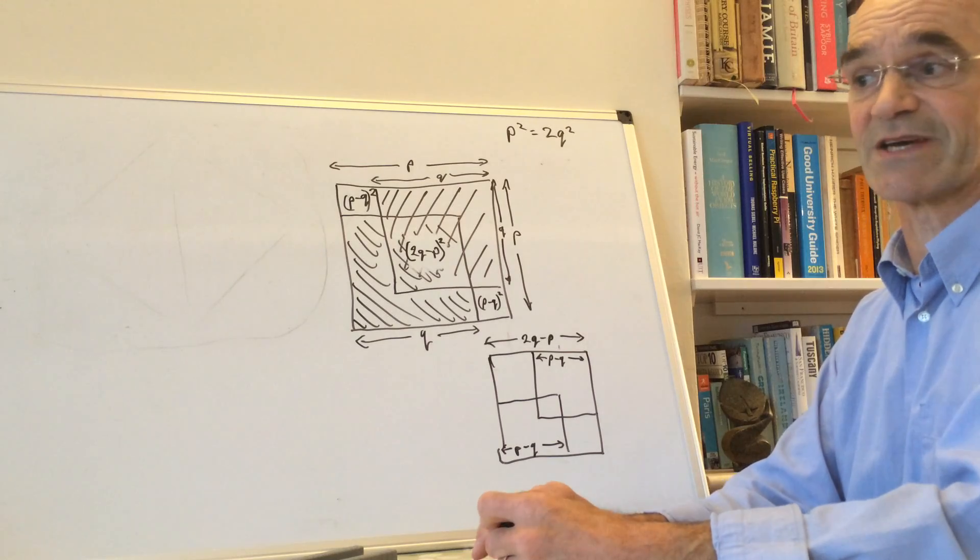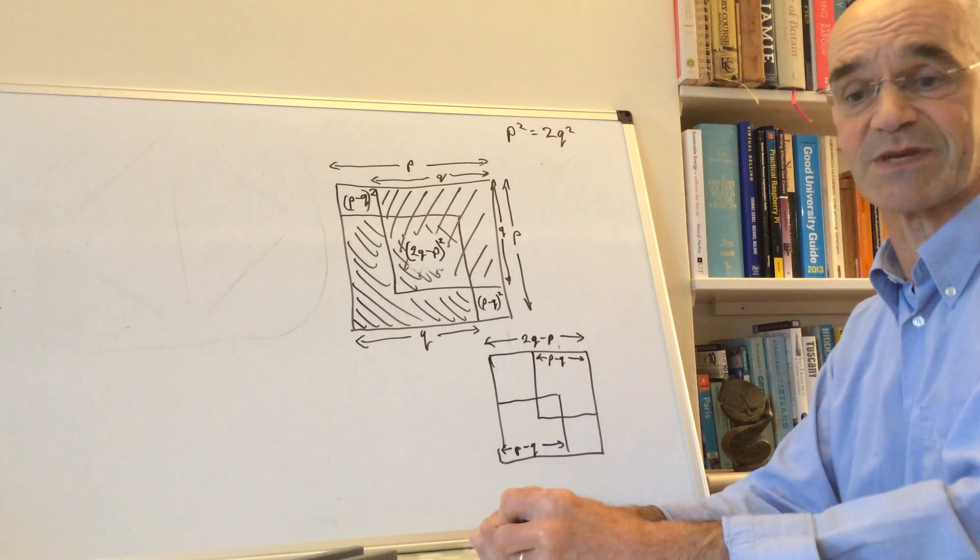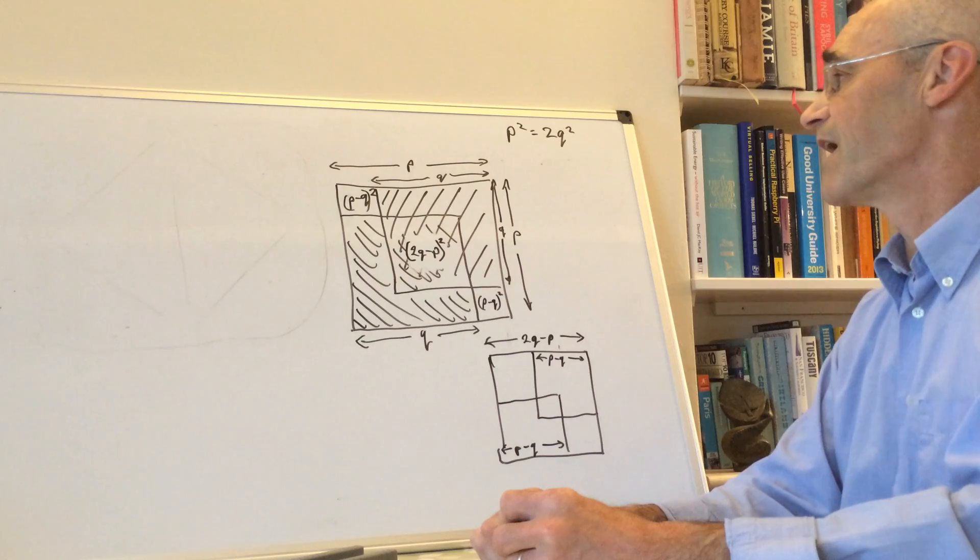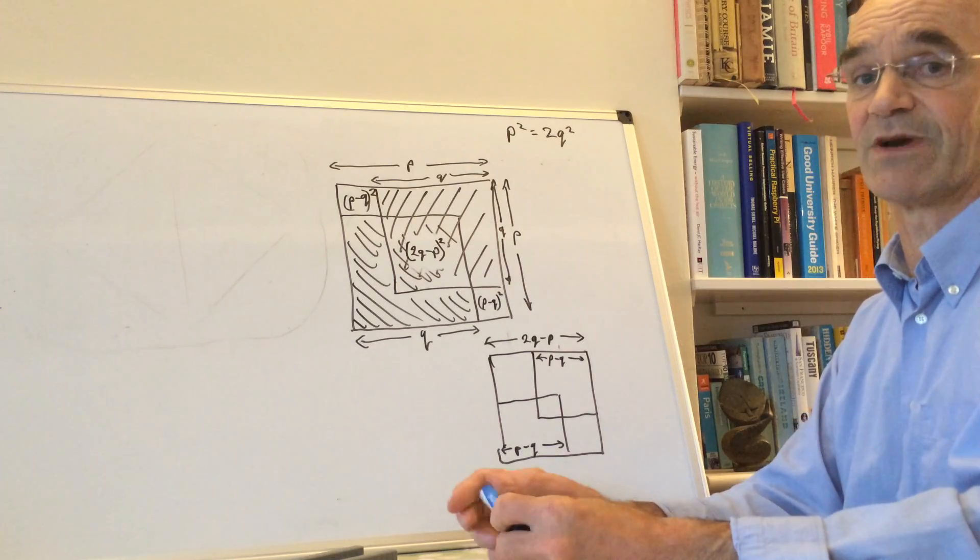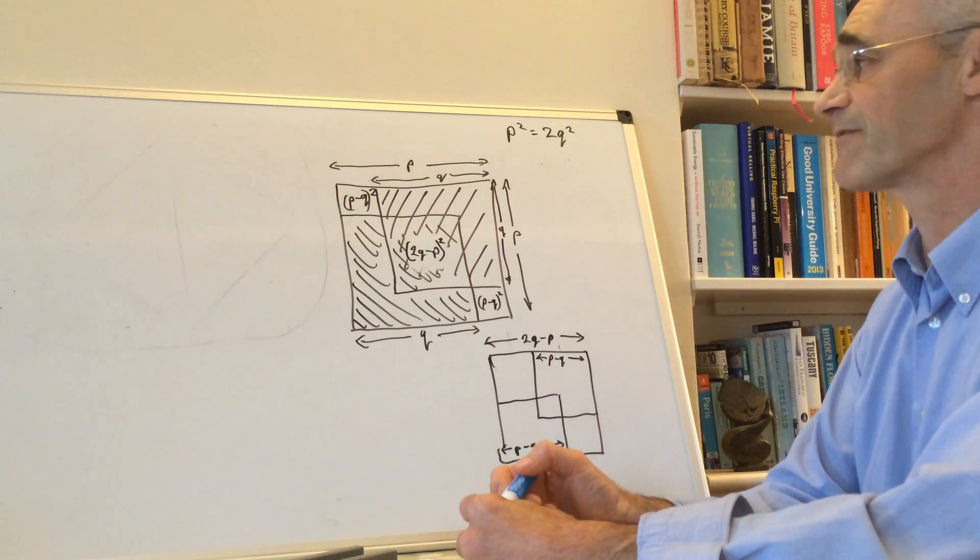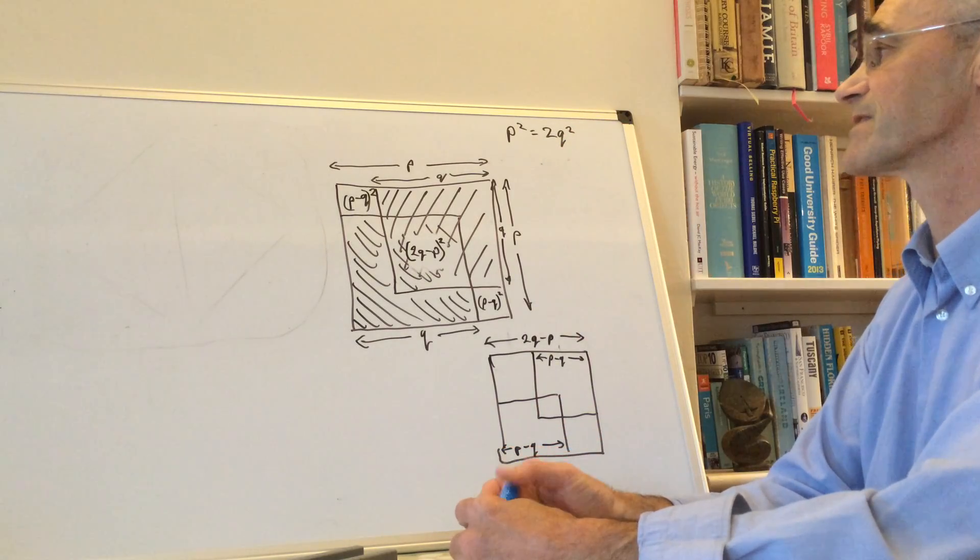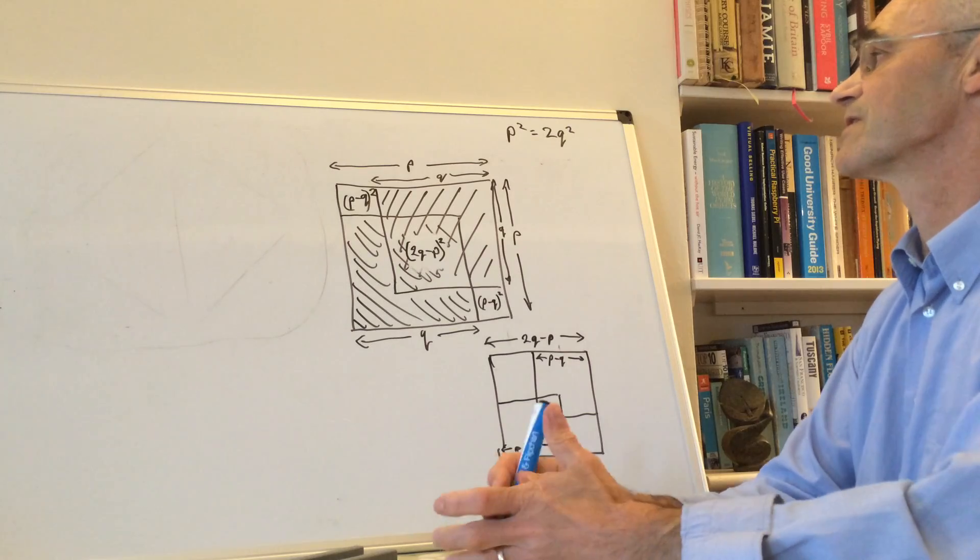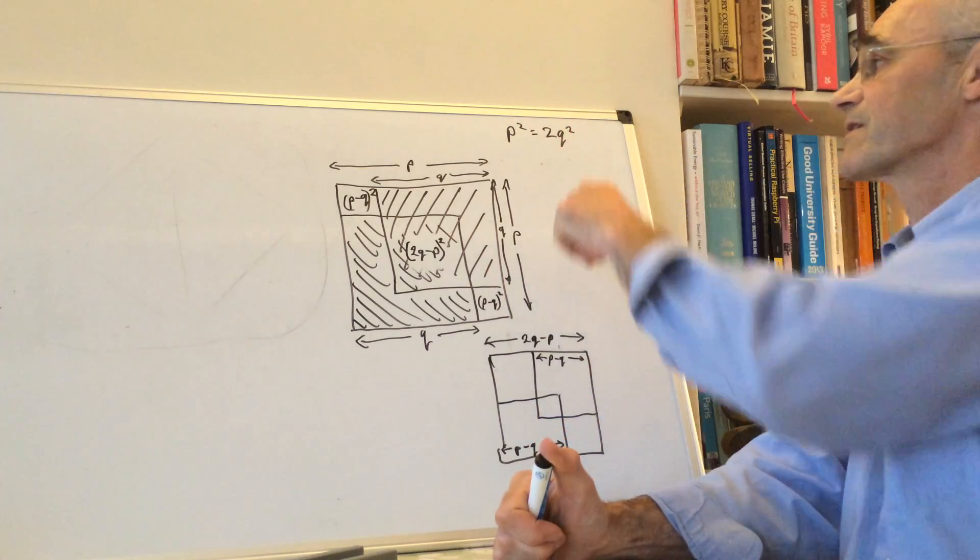But obviously we can't, because then our integer squares become smaller than 1. So we're forced to the only possible conclusion, which is that the starting conditions were invalid and there can't be any such pair of numbers p² and q².